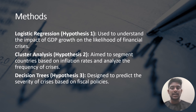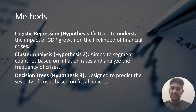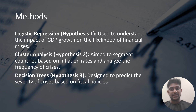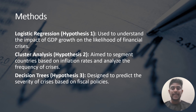In logistic regression, our first hypothesis wanted to discover the role of GDP growth in predicting financial crises. As you can see in the scatter plot here, the x-axis represents the GDP growth rate while the y-axis indicates the occurrence of financial crises.